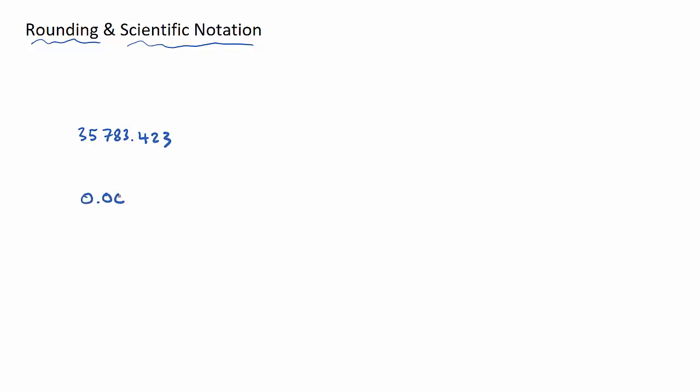Rounding and scientific notation. These concepts appear in every single IB math studies exam. I'm going to look at both of them individually — rounding and then scientific notation — and I'm going to use two numbers as examples: 35,783.423 and a very small number, 0.007635.